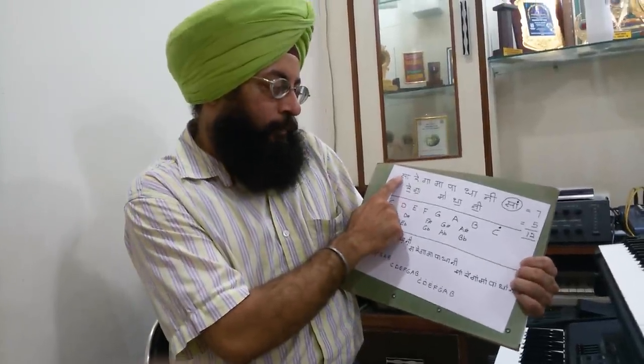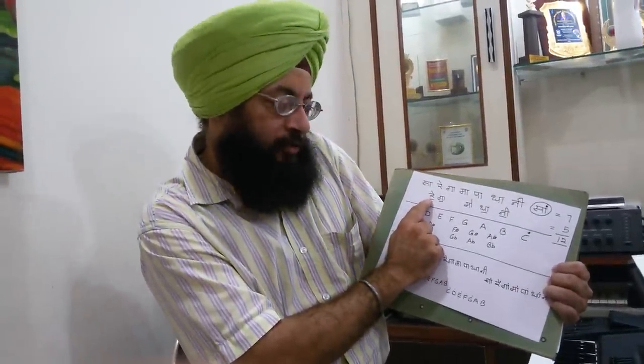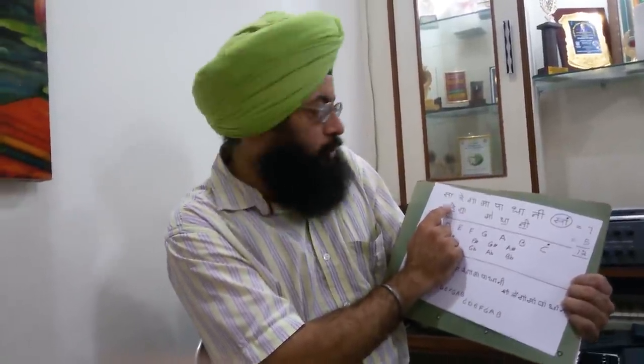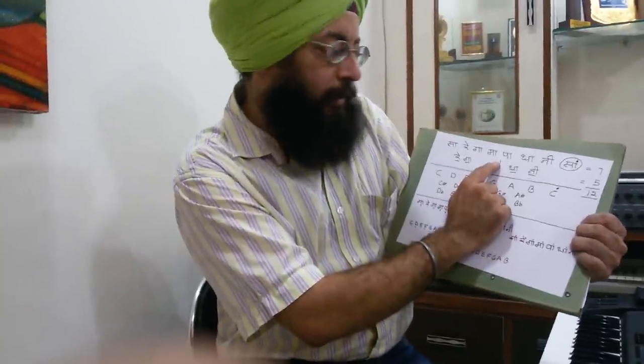Sa and Pa are the fixed Svars — they do not have any Komal or Tevra. Re Komal means the note which falls between Sa and Re. It is half a note down from Shuddh Re and half a note up from Sa. Similarly we have Ga Komal. Ma is Tevra, meaning it is just a half note above Shuddh Ma. So Re, Ga, Dha and Ni are the Komal notes, and Ma is the Tevra note.